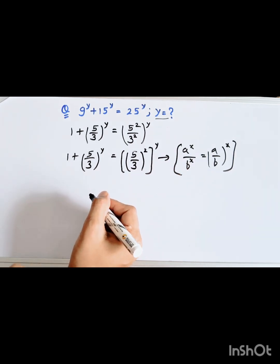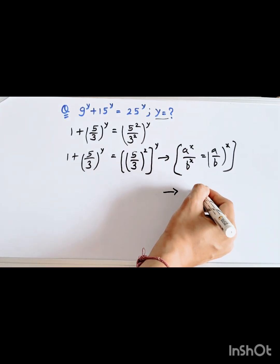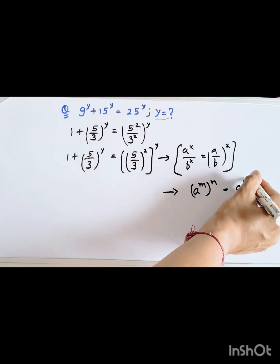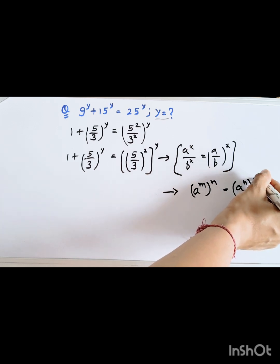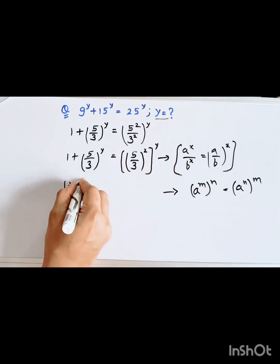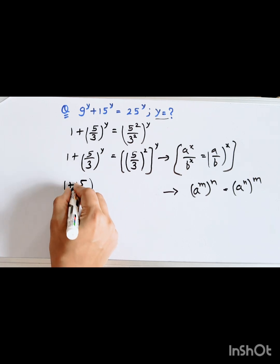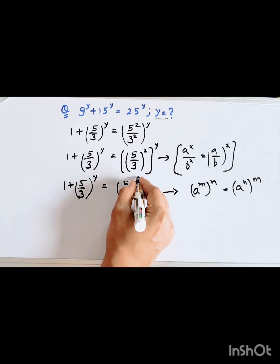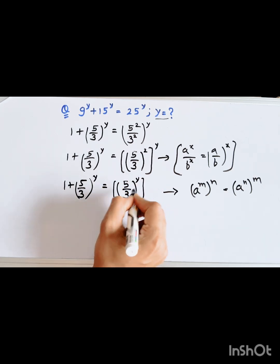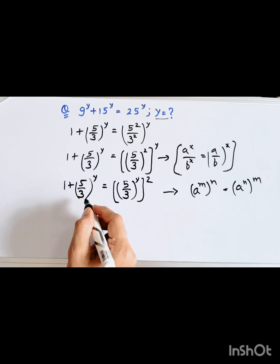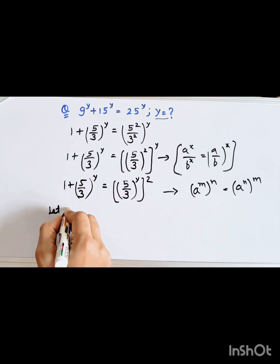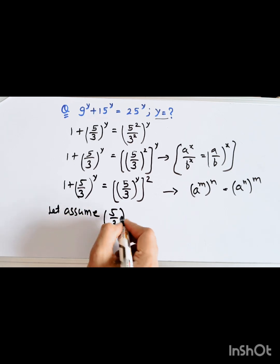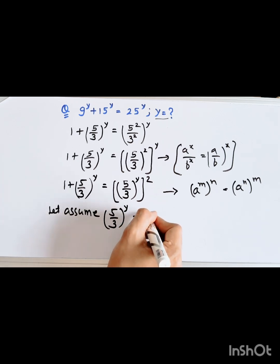We apply another rule: (a to the power m) whole to the power n equals a to the power mn. So we have 1 plus (5/3) whole to the power y equal to (5/3) whole to the power 2y. Now we substitute: let t equal (5/3) whole to the power y.